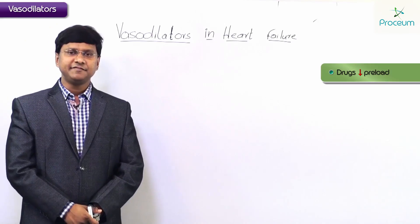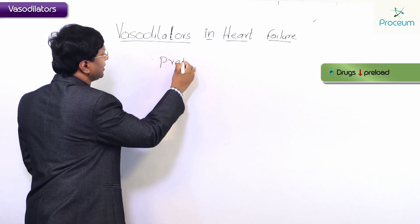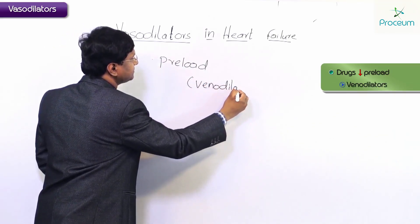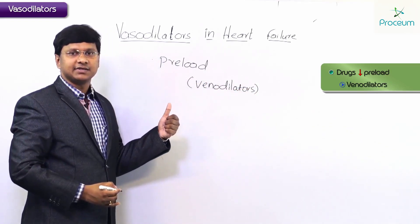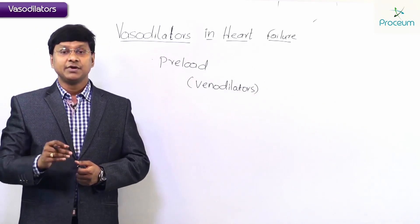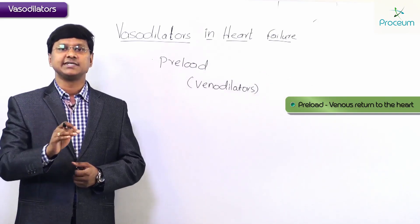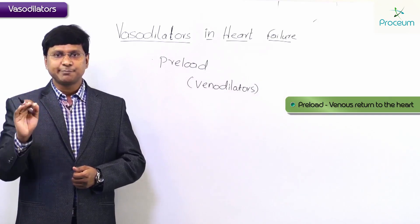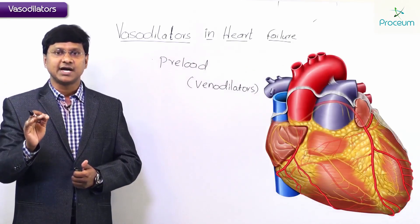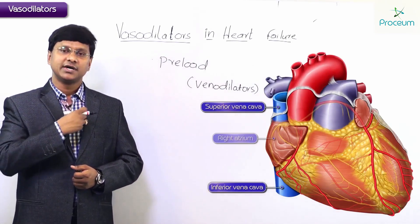The drugs which will reduce the preload are venodilators. Preload means the venous return to the heart. If we are reducing the preload, that means we are reducing the venous return to the heart, which comes through the superior vena cava and the inferior vena cava into the right atrium.